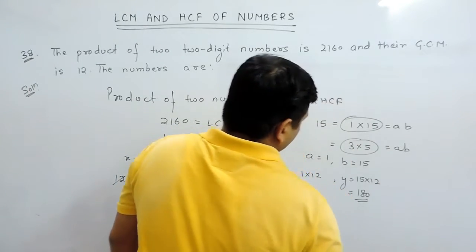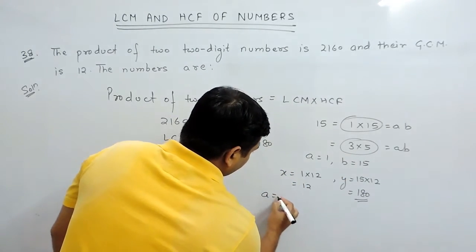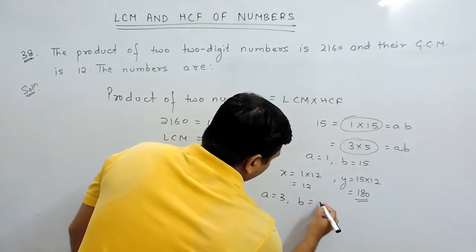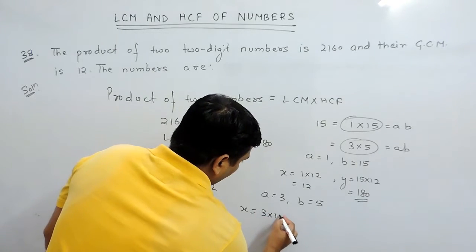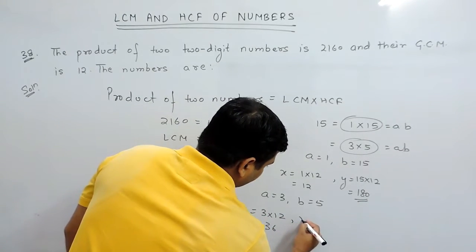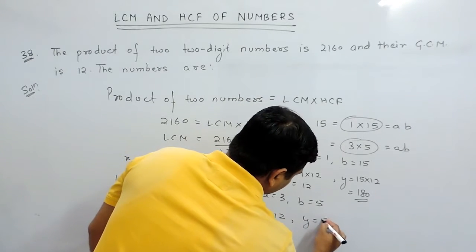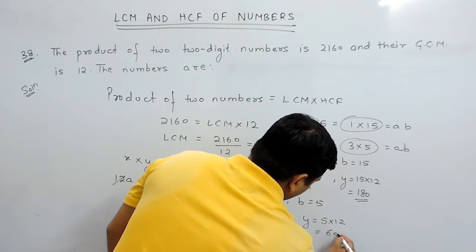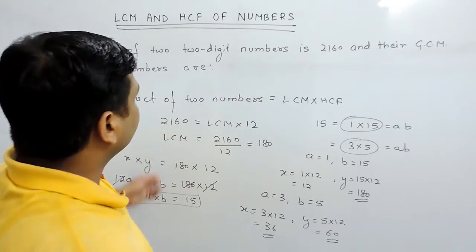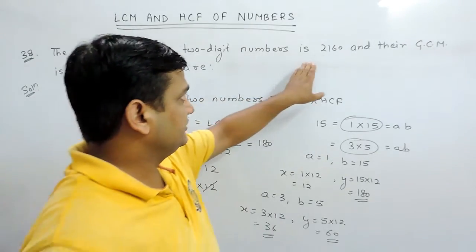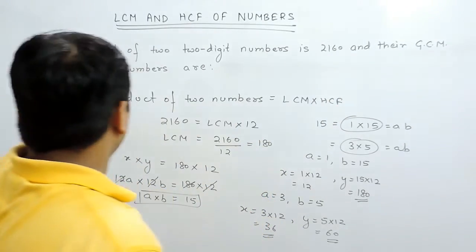So we will take this co-prime pair, and in this co-prime pair, A equals 3 and B equals 5. Therefore, the value of X is 3 into 12, that is 36, and the value of Y is 5 into 12, that is 60. Therefore, 36 and 60 are the 2 two-digit numbers whose product is 2160 and their GCM or HCF is 12.